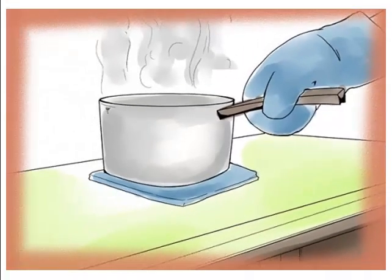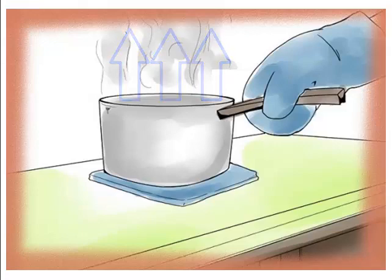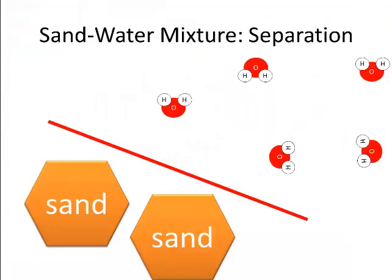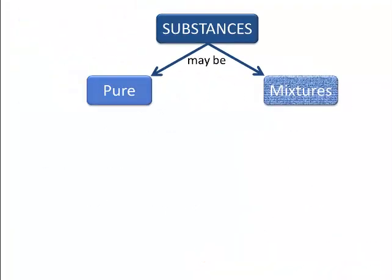Another way we could break that mixture down is if we heated it. Then the water would evaporate and go up into the air, but the sand cannot evaporate. It would stay where it is. So in that way we've separated the mixture without breaking any chemical bonds, but we can't do that with a pure substance.